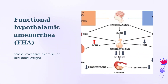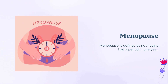Functional hypothalamic amenorrhea, FHA, can be caused by stress, excessive exercise, or low body weight. It is sometimes associated with anorexia, an eating disorder. Menopause is a naturally occurring decline in ovarian function that happens around the age of 50. Menopause is defined as not having had a period in one year. Some women experience other symptoms as well, such as hot flashes, difficulty sleeping, and mood changes.